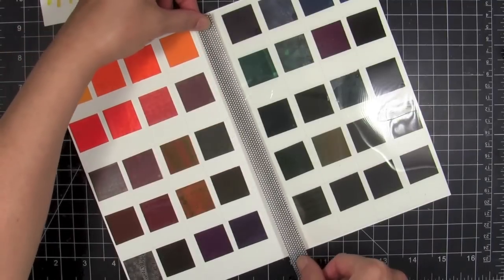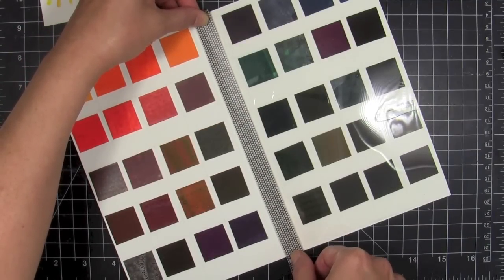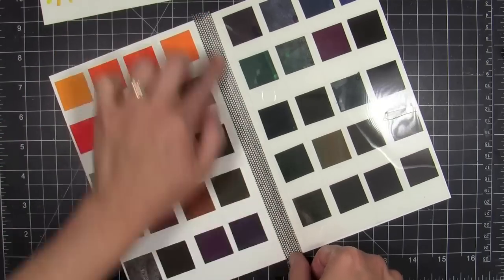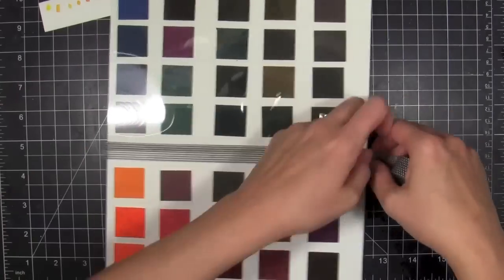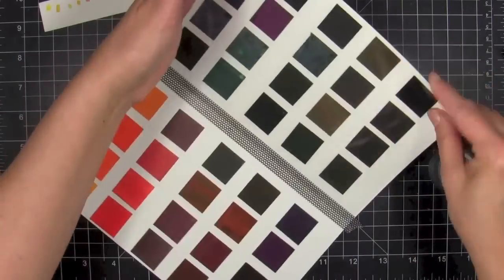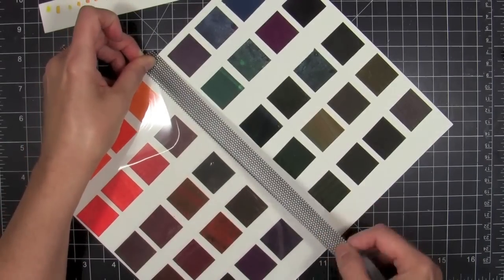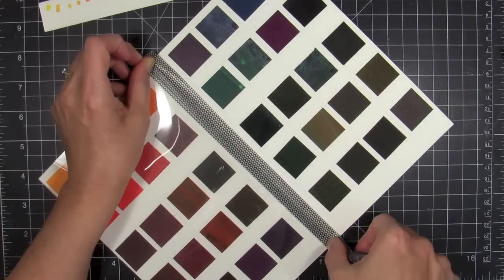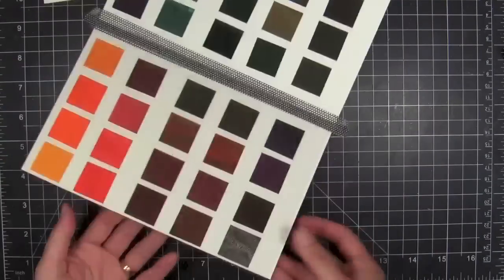I'm using washi tape—you could use book binding tape and things like that, but I have lots of washi tape on hand and I love it, so that's what I'm using. It's temporary, so if I want to remove it I can peel it out easily without destroying the whole book if I change my mind. I'm just going to sandwich it in there and put the washi tape on each side so that I can create kind of a flap.